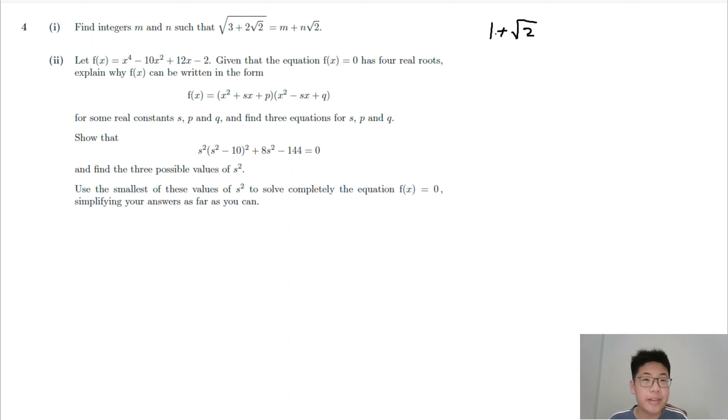Just squaring and comparing terms can give us 1 plus the square root of 2, n equals 1. This number is a sum of ratios and crops up very frequently in the geometry of an octagon.